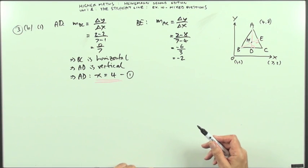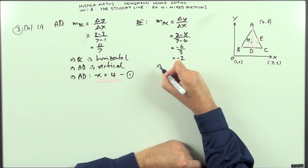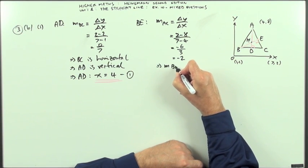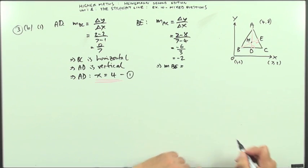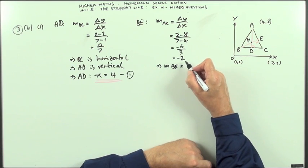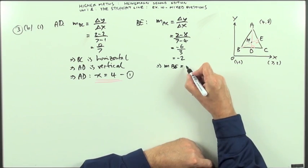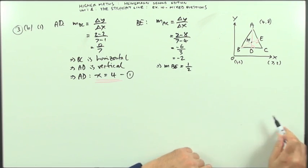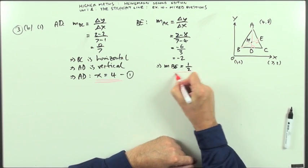Which means that the gradient of BE will be the negative of the reciprocal of it. They have to multiply to get negative 1. So the gradient of BE is a half.